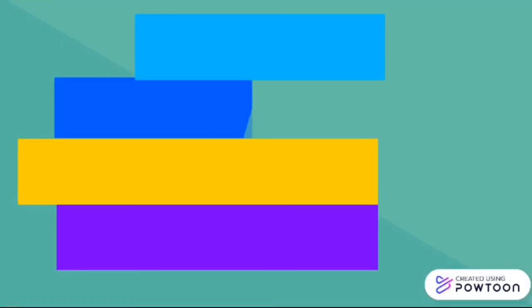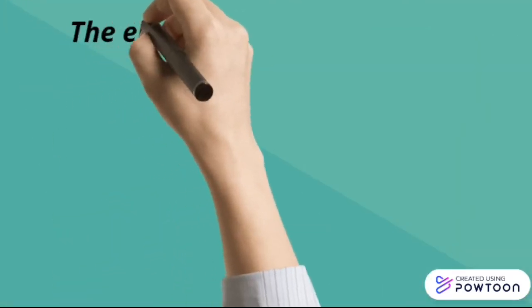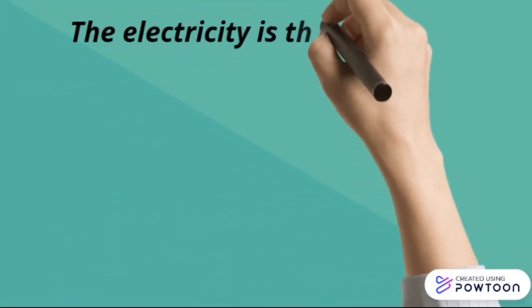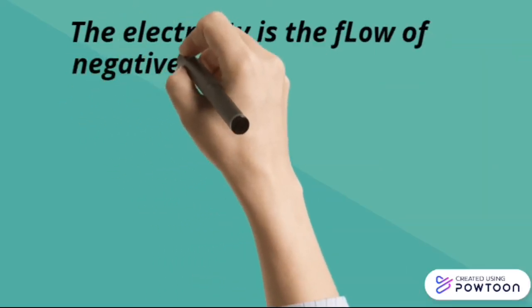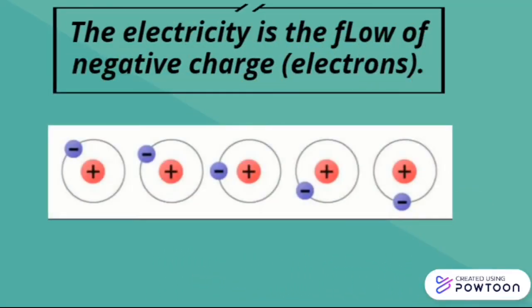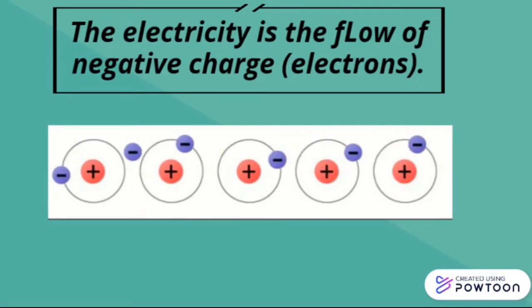In this video I'm going to explain what ampere current is, their definition, and how they work. First we need to know that electricity is the flow of negative charge, aka electrons. This image shows the movement of electrons through the wire's atoms.